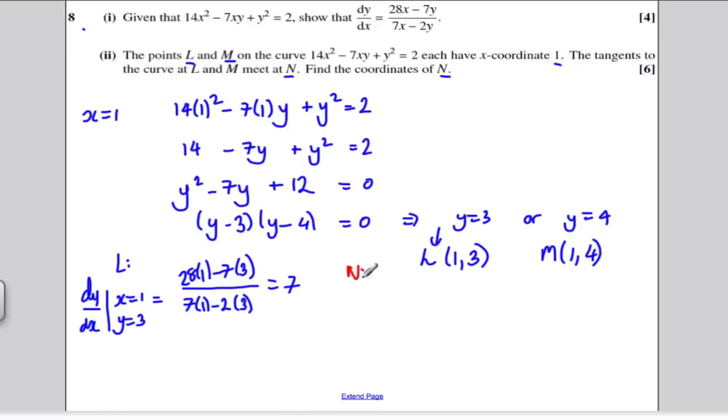Let's do at N: dy/dx when x = 1 and y = 4. That's going to be equal to 28(1) - 7(4), all divided by 7(1) - 2(4). Well, you'll notice the top is 28 - 28, so dy/dx at that point is equal to 0.